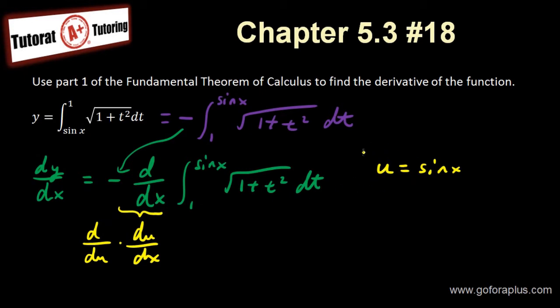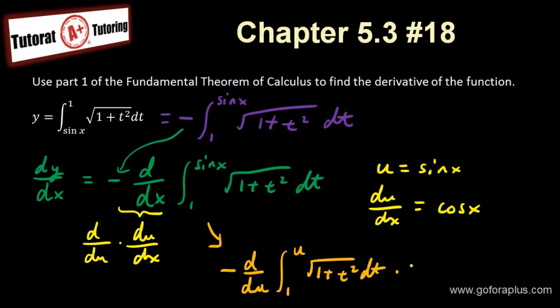I want to substitute u by sine of x. Now it's no longer d over dx, because I want it to be chain rule now. Chain rule is saying that d over du times du over dx. I want to find out what is du over dx. I know that du over dx here is going to be cos of x. Now I just need to derive the integral that is in terms of u. This is going to become minus d over du integral from 1 to u, square root of 1 plus t squared dt, times du over dx. I'm using substitution, u equals sine of x, replacing the boundary, and multiply with du over dx at the end. This is chain rule.